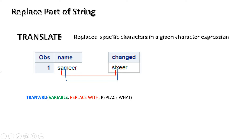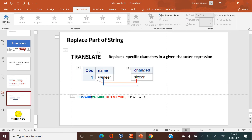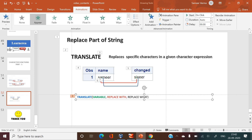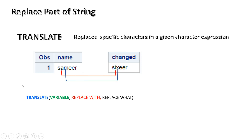Let's look at the syntax. It is almost the same but there is one key difference: in TRANWRD, you first provide what you want to replace and then what you want to make it. But in TRANSLATE, the order is reversed — you first provide the new value that you want to make, and then the old value that you want to change.